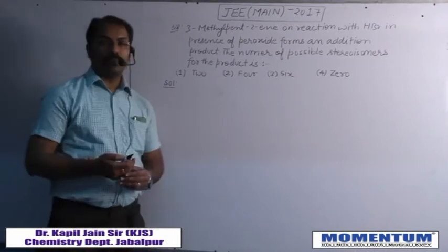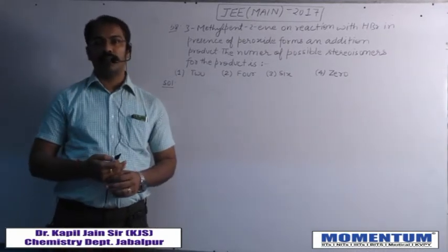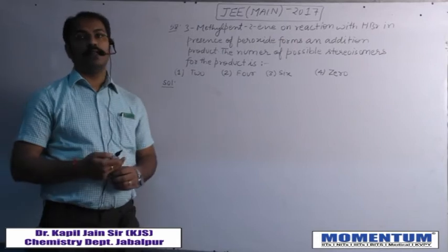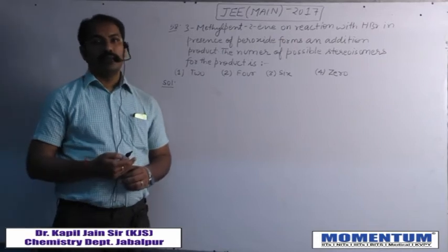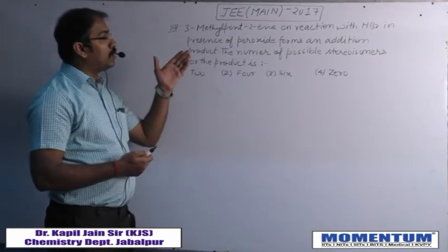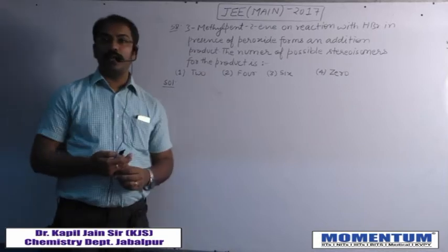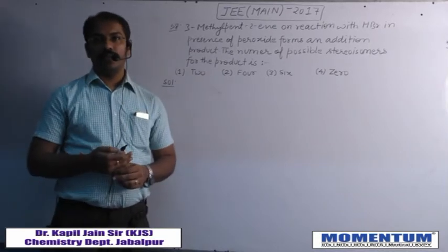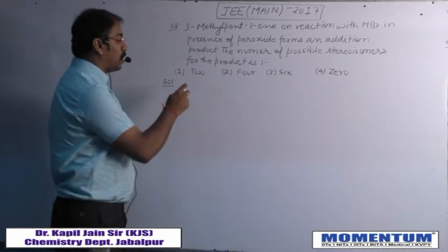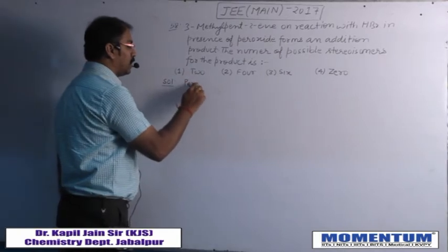The next question is related to the hydrocarbon chapter, also related to general organic chemistry. An alkene is being reacted with HBr in the presence of peroxide. This involves the Kharash effect, also known as the peroxide effect.